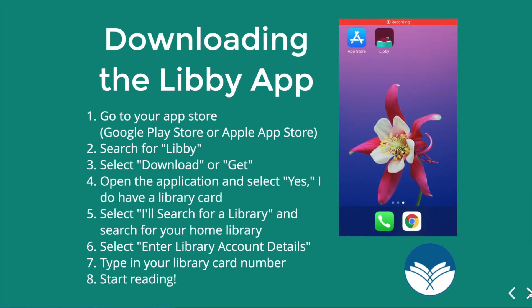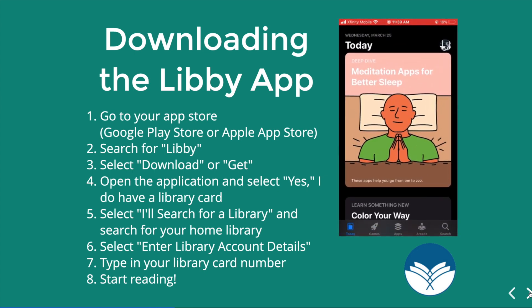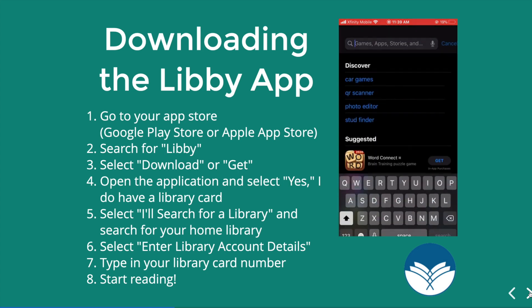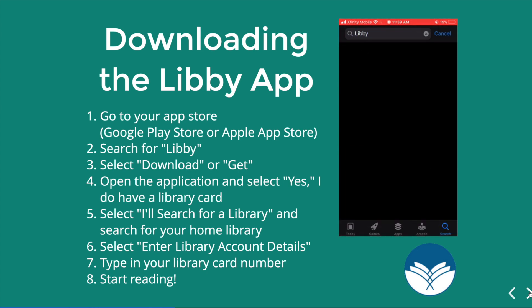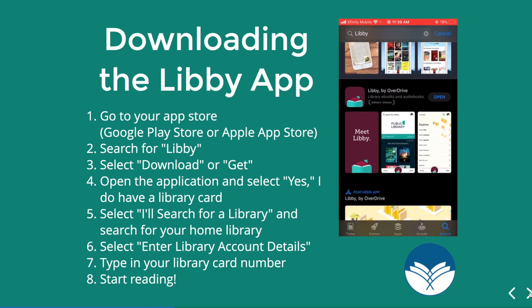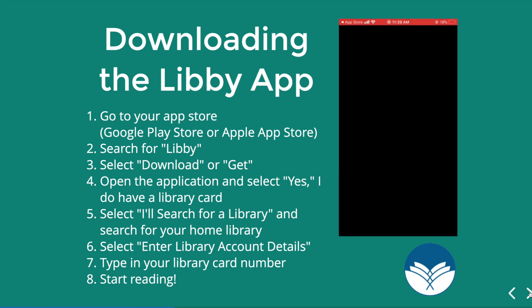To start, we want to download the Libby app. To do this, if you have an Apple device you'll use the Apple App Store, or if you have the Kindle Fire or an Android device you'll go to the Google Play Store. From here I'm going to go to my App Store, select the search function, and search for Libby — L-I-B-B-Y. We want the Libby by Overdrive option. Normally it'll say get or download, but because I already have it downloaded it says open, so I'm going to select open and it's going to bring me into Libby.